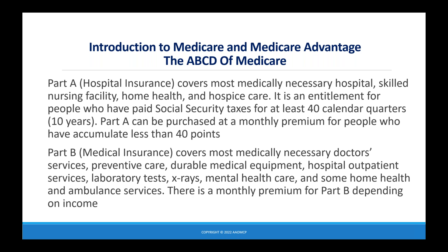Part B is medical insurance. This covers most medically necessary doctor services, preventive care, durable medical equipment, hospital outpatient services, lab tests, x-rays, mental health care, and some home health and ambulance services. There is a monthly premium for Part B, and that premium depends on one's income.